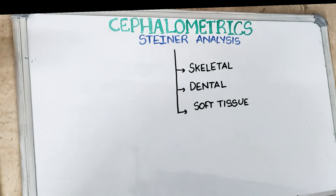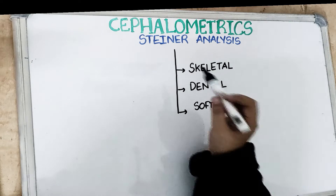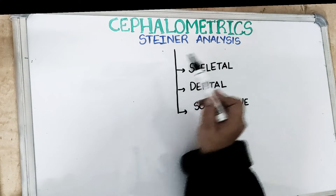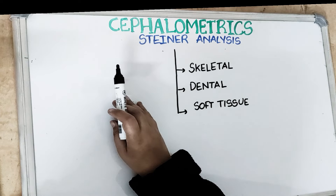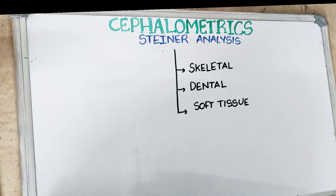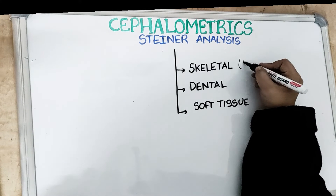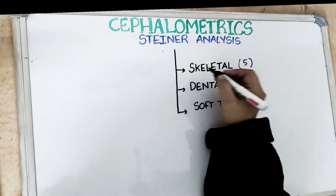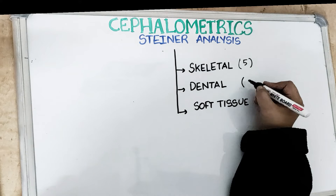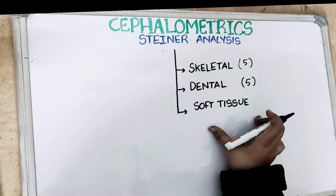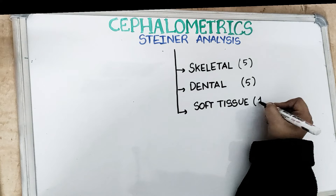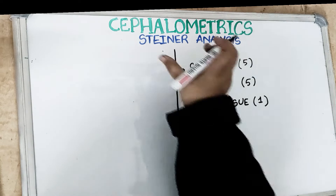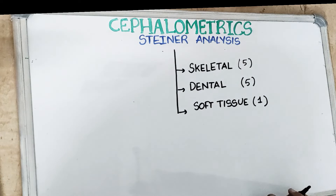What's up guys, Dr. Sangeeta here for another lecture of Dental Patshala. Thank you all who have subscribed. Today we will be discussing Steiner Analysis. Last video we studied the Downs Analysis which had 10 parameters — 5 skeletal and 5 dental. Steiner Analysis also has 5 skeletal parameters, 5 dental parameters, and an additional soft tissue analysis parameter. So let's get started.